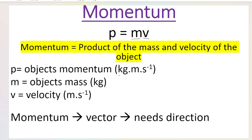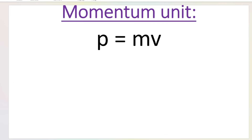I just want to show you how the unit works. The unit is kilograms meters per second. If you ever forget that in your exam, it's very easy to remember: the unit for mass is kilograms and the unit for velocity is meters per second. Since we're multiplying mass and velocity, we multiply those two units together — kilograms meters per second. That's the unit for momentum.